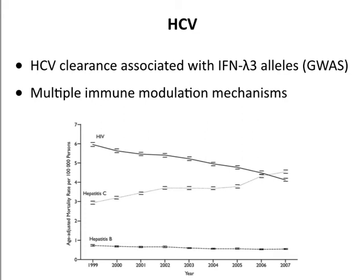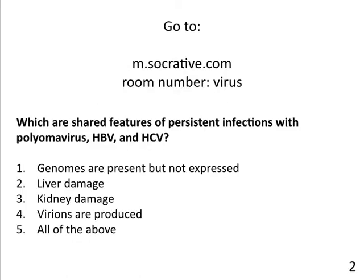A student asks whether the specific interferon lambda allele associated with HCV clearance would make it a good candidate for gene therapy. The answer: possibly, but that's a long-term goal with no clinical trials yet—it would be 10 years before reaching the clinic. If antivirals could be given cheaply to everyone, it would eradicate the virus since there's no animal reservoir. Gene therapy is a reasonable approach but antivirals are more immediately practical.